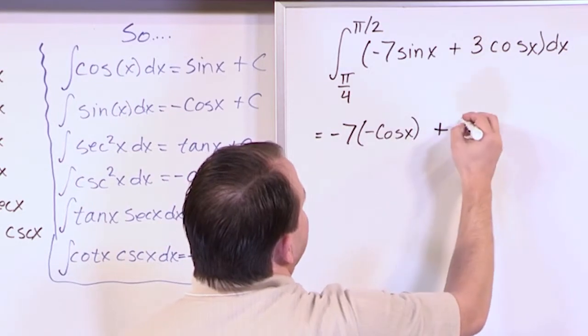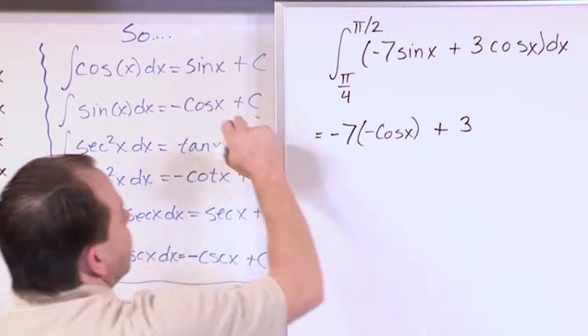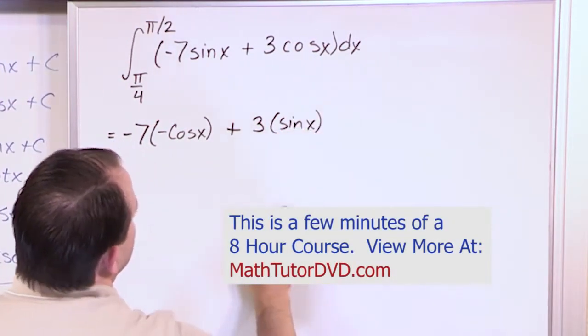Plus here we have a 3, so that's going to stay there. What is the integral of cosine? Integral of cosine is sine. So we're going to have sine of x.